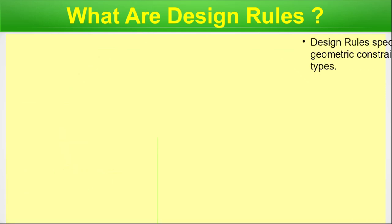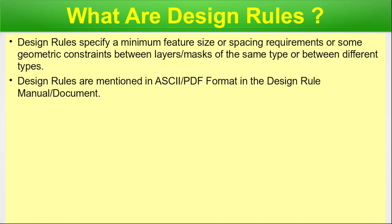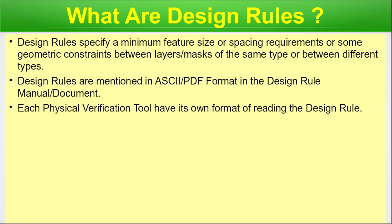Design rules specify minimum feature size, spacing requirements, or geometric constraints between layers or masks of the same or different types. Design rules are mentioned in ASCII or PDF format in the design rule manual, sometimes called the design rule document. Each physical verification tool has its own format for reading the design rule — the design rule decks for tool A cannot be used for tool B from another EDA vendor, though fundamentally the rules remain the same.